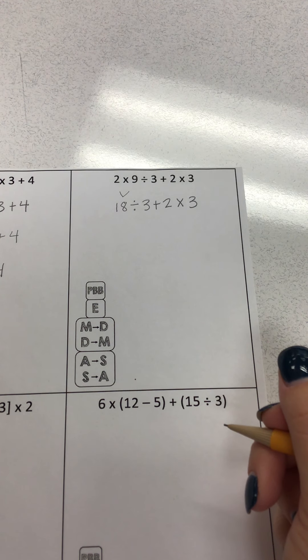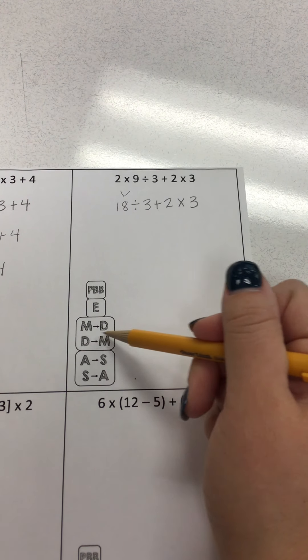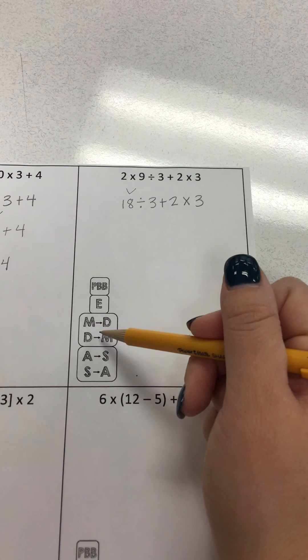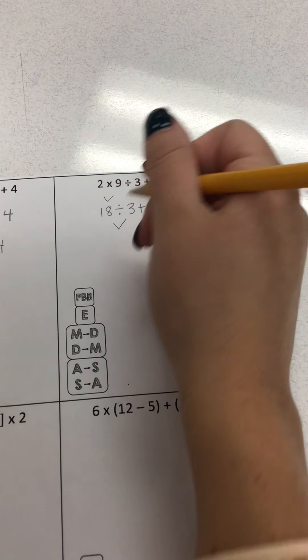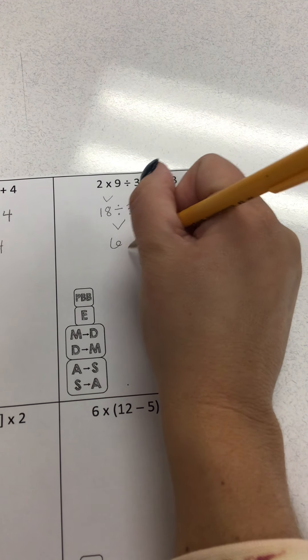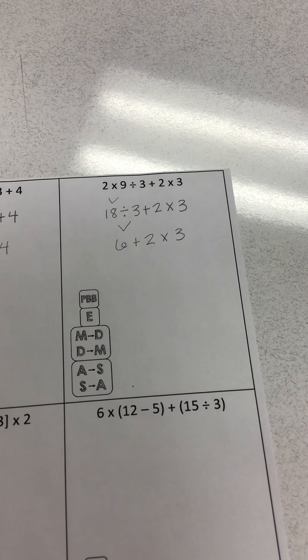Now, I have divide, add, multiply. Divide and multiply are on the same step, but I move left to right. So I'm going to divide first. 18 divided by 3 is 6 plus 2 times 3. Again, I'm bringing everything down.